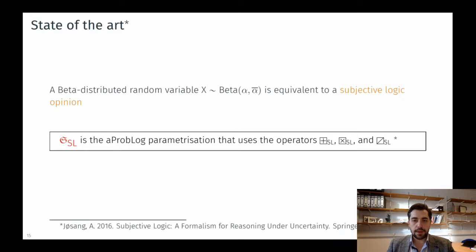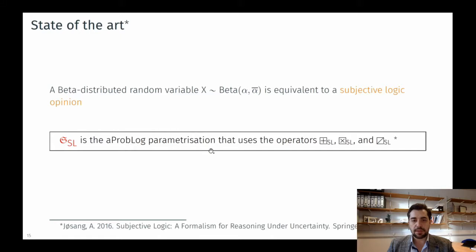To compare our approach we consider the leading proposal for manipulating beta distributed random variables: subjective logic, where a subjective logic opinion is essentially an alternative representation of a beta distribution. We therefore created an AProbLog parameterization using standard subjective logic operators for addition, multiplication, and division taken from the literature.